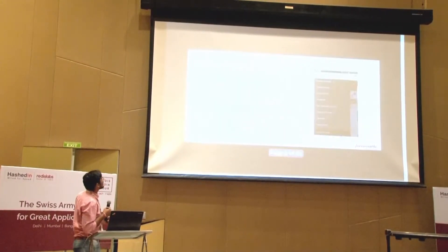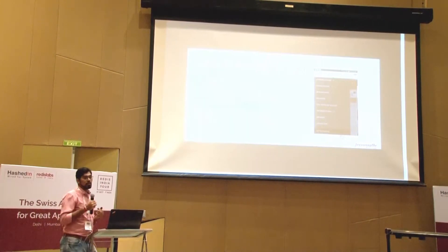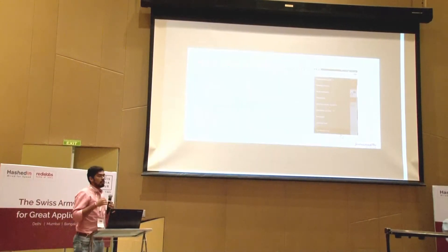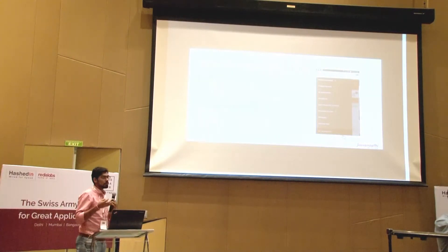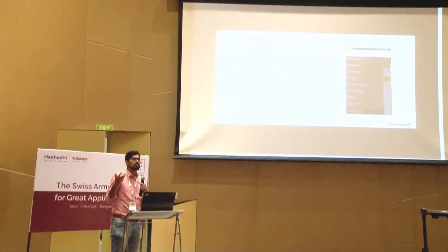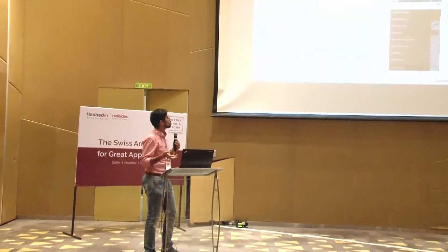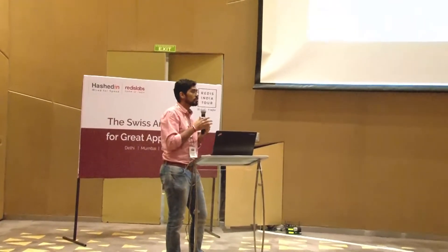Another use case is the user dashboard numbers. In Jeevansathi, we show different counts to users — the interest received count, acceptance count, match alert, number of messages received, number of users shortlisted, visitor alert, and so on. All these numbers come from different tables. So if you have to show these different numbers in each request, you have to query and calculate data from different tables, process the data, and show it to the user. Getting data from different tables takes a huge amount of time and also creates actual load on the database.